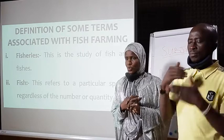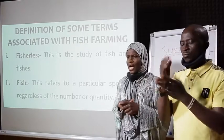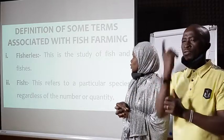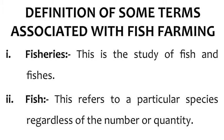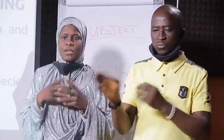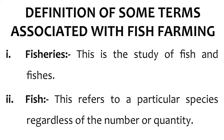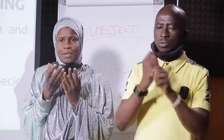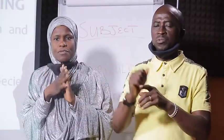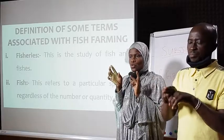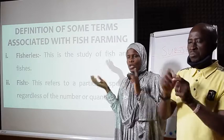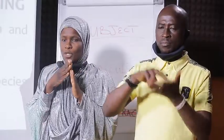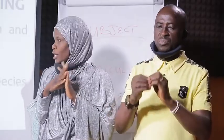Before we continue, we have to look at definitions of some terms associated with this topic. The first is fisheries — the study of fish and fishes. A fish refers to a particular species regardless of the number or quantity. In fish farming, when you say fish, you are referring to a specific species. Even if there are 100 tilapia fish, you still refer to them as fish. But when you bring two different species together, such as tilapia with catfish, they are known as fishes.